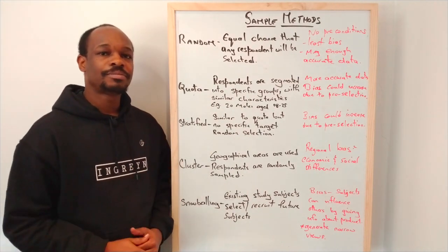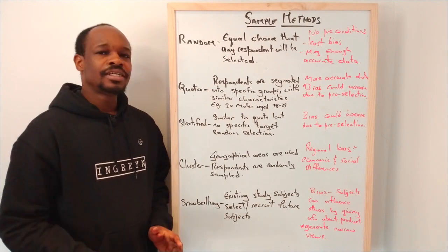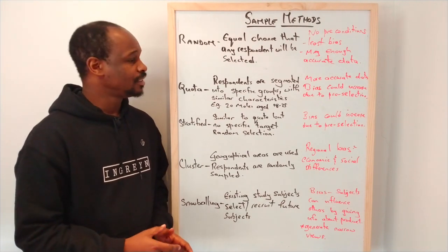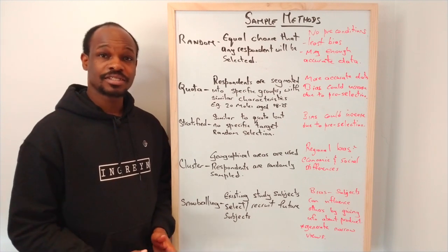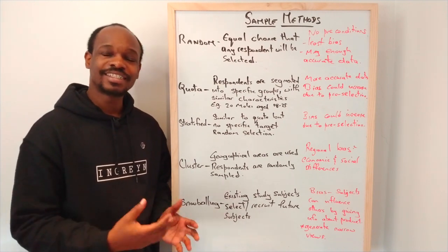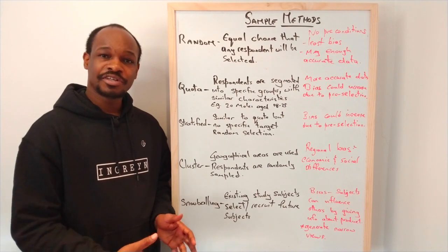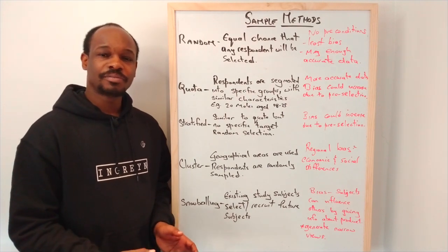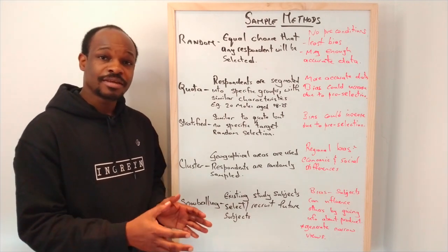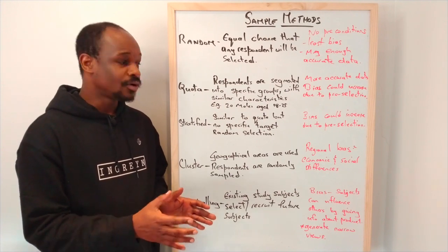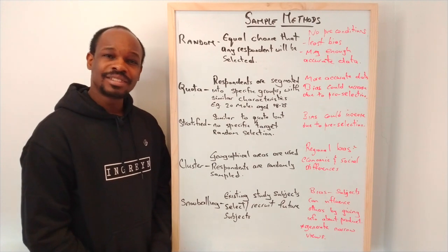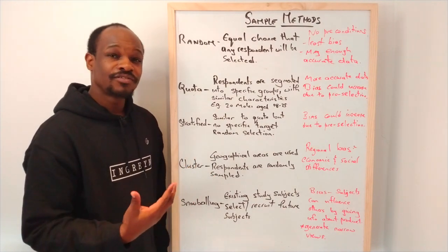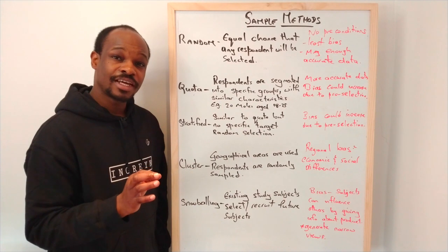In quota sampling, respondents are segmented into specific groups with similar characteristics. Based on things that are identical with correspondence within a particular population, we would segment those individuals accordingly. For example, we might want to select 20 males age 18 to 25, that is specific and direct.